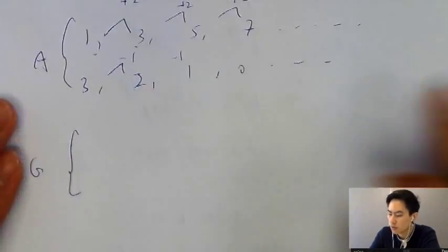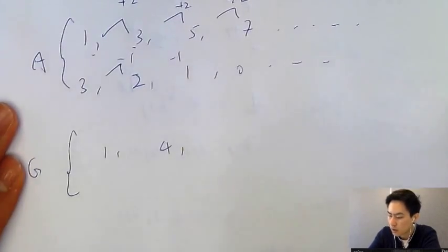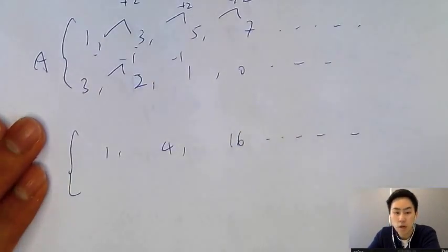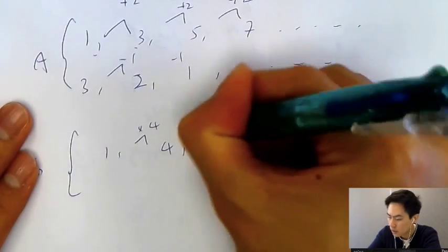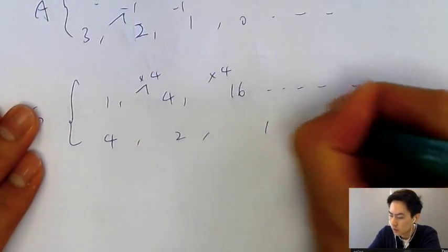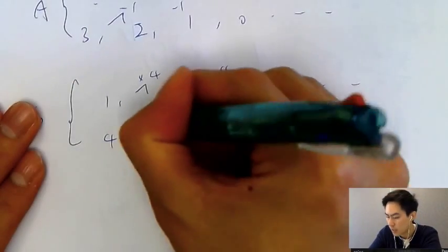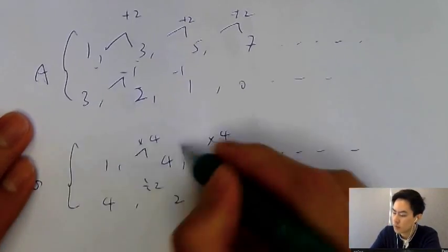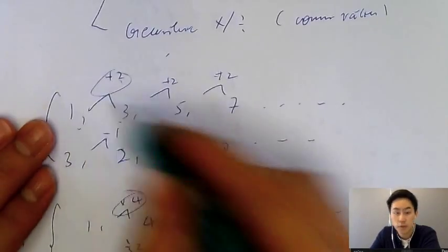How about geometric sequence? Let's say we have one, four, sixteen, and so on. You can see it's times four, times four. If I give you four, two, one, and so on, that will be divided by two, divided by two. This is what we call the common ratio and common difference.